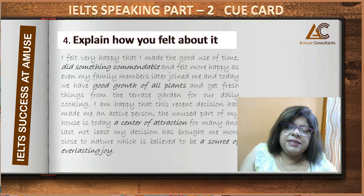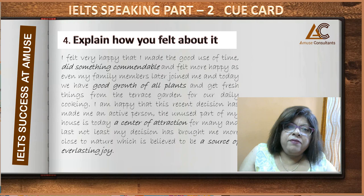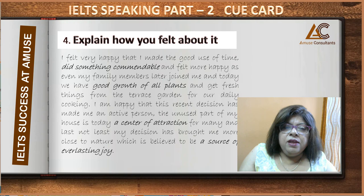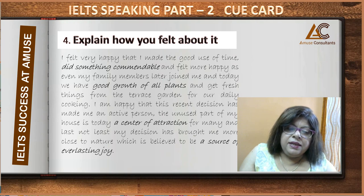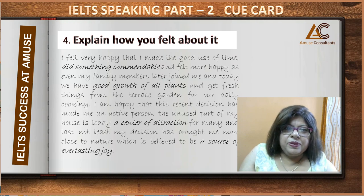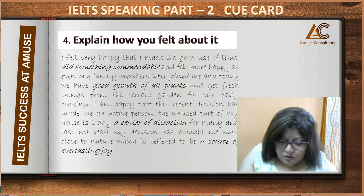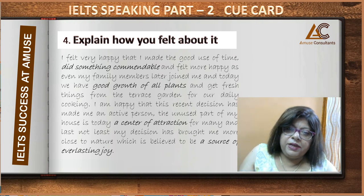So how did you feel about it? You felt very good, did commendable work, the garden grew, family members also got involved, and the unused part of the house became a center of attraction. It brought everlasting joy because when we grow a garden, we feel happy all the time. In this last cue, we discussed how we felt after taking that particular decision — and all four cues are now complete.